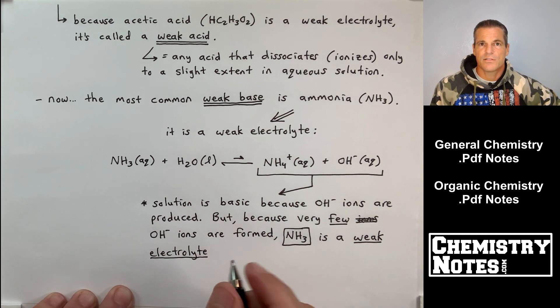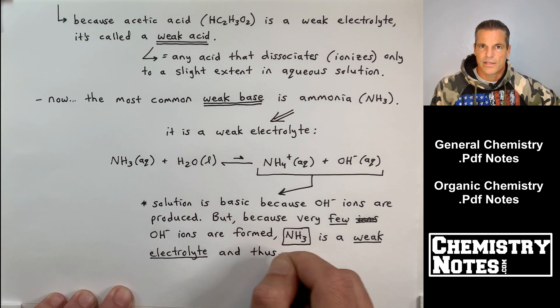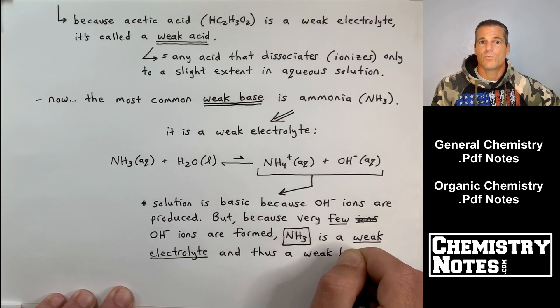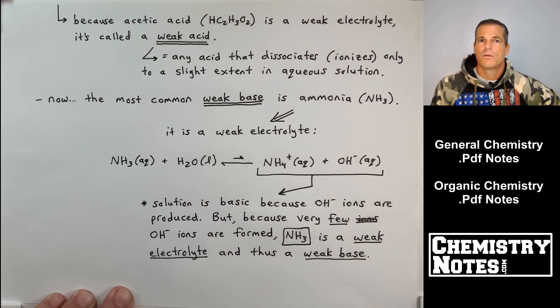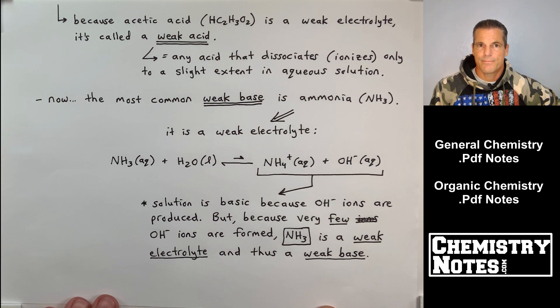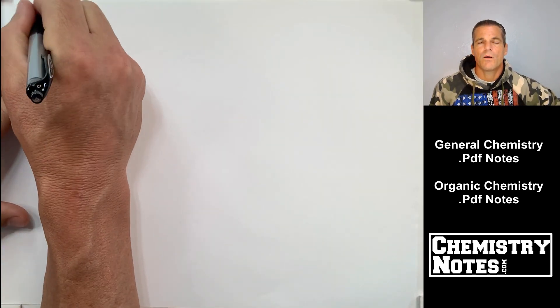Strong acids and strong bases are strong electrolytes. Weak acids and weak bases are weak electrolytes. You got it, that's how we do that.